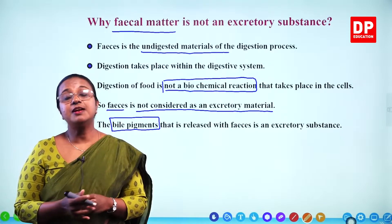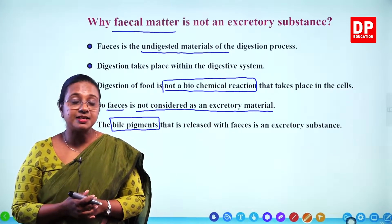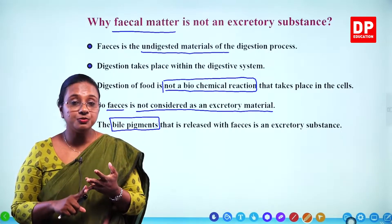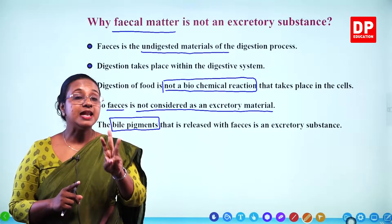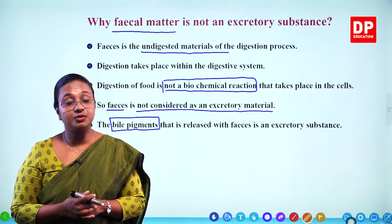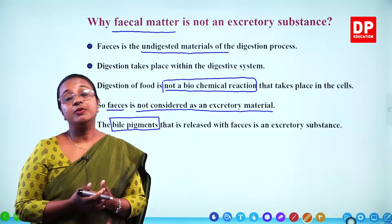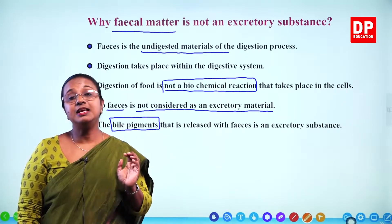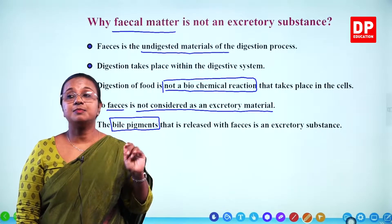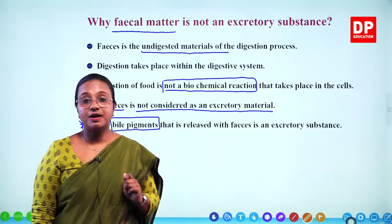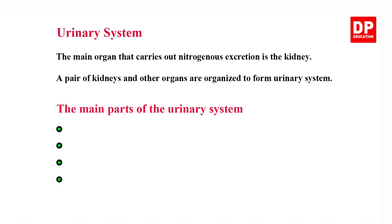You know the three main excretory substances: exhaled air, urine, and sweat, and the three organs related to them. Now we will go into detail about the excretory system — the urinary system of our body.